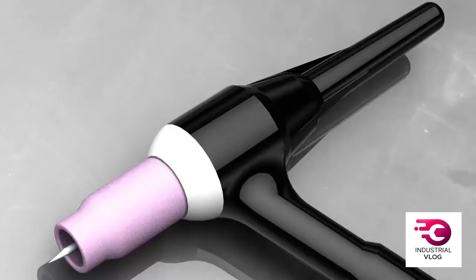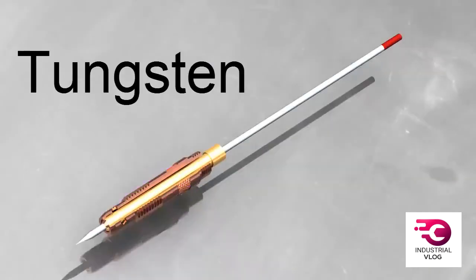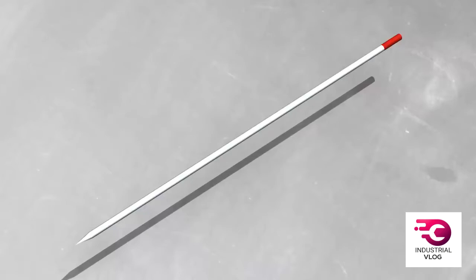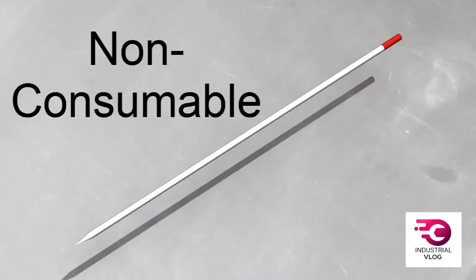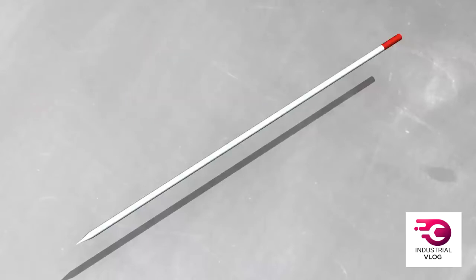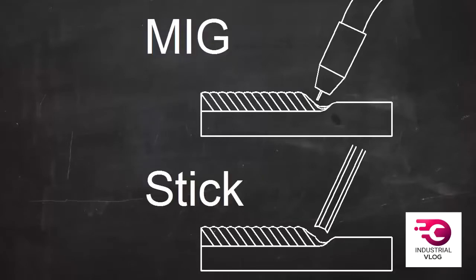TIG welding uses a tungsten electrode. Tungsten has an extremely high melting point. When you TIG weld, the electrode gets hot but it doesn't melt. We say that it's a non-consumable electrode. That doesn't mean it lasts forever, just that it doesn't melt and become part of the weld. In other welding processes, the electrode melts and becomes filler metal. Those are consumable electrode processes.